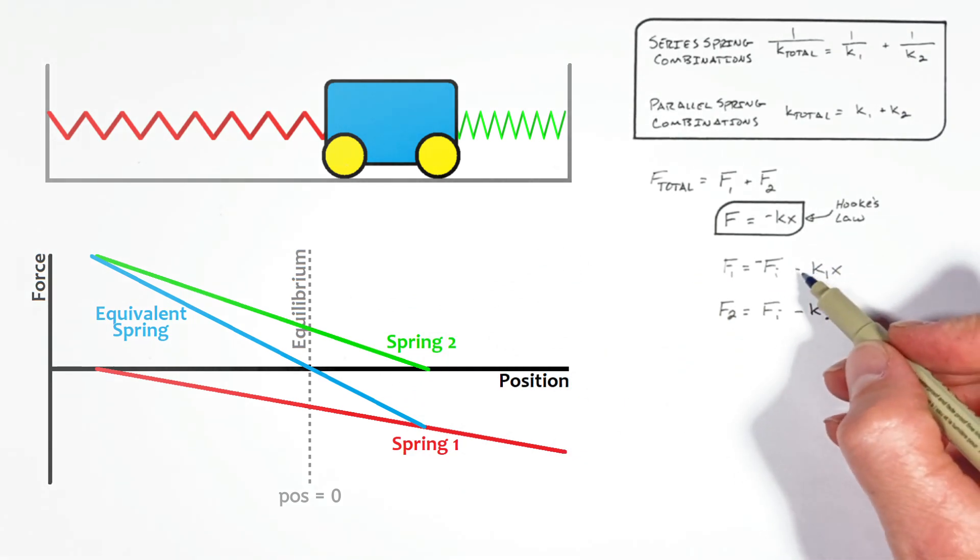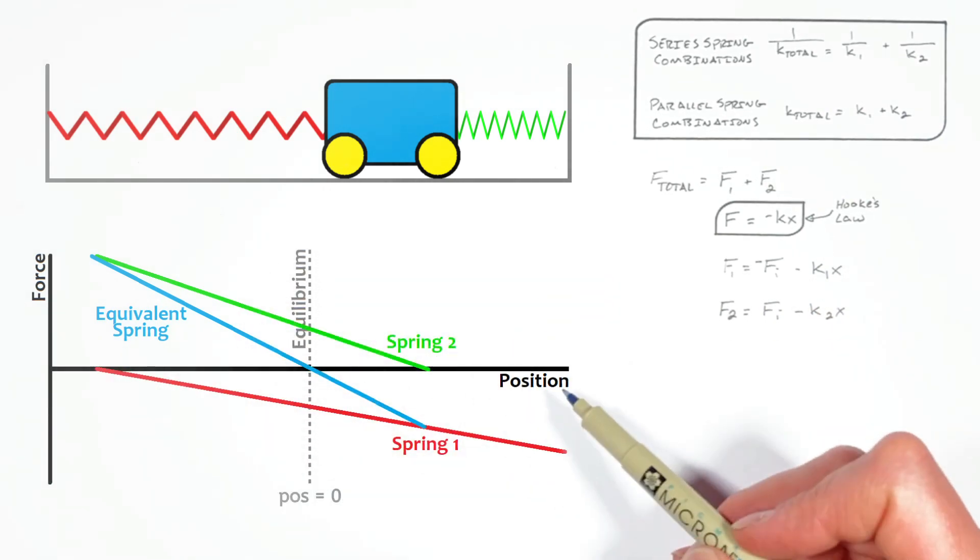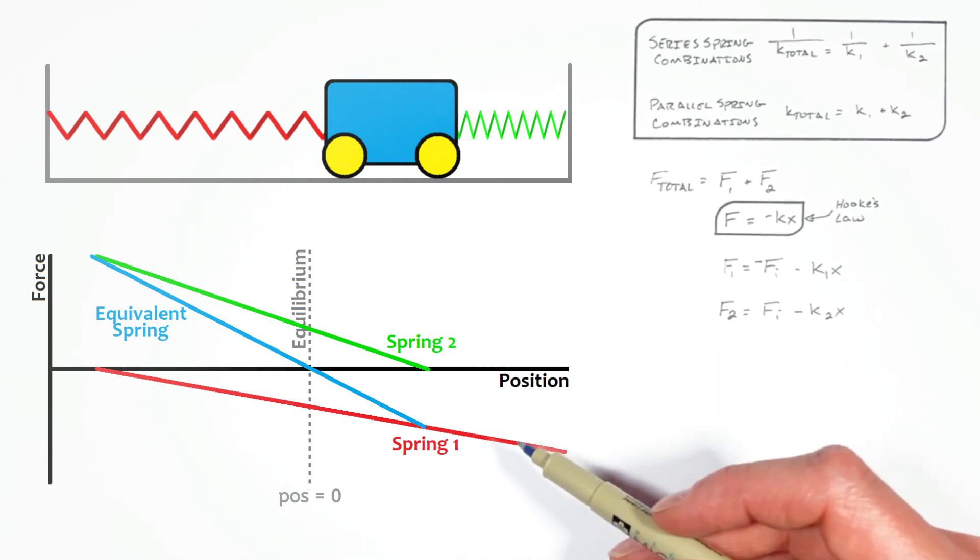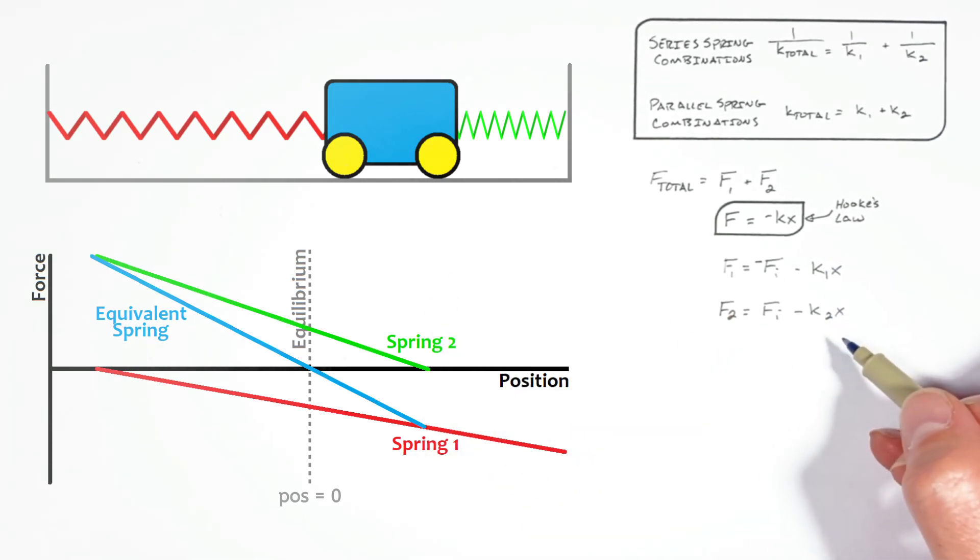Now you may be tempted to want to flip one of the signs on these k values over here, but realize on our force versus position graph, both of these lines have negative slopes. Or going back to spring constants, on a force versus position graph, the slope of the line is nothing other than the k value, or spring constant.